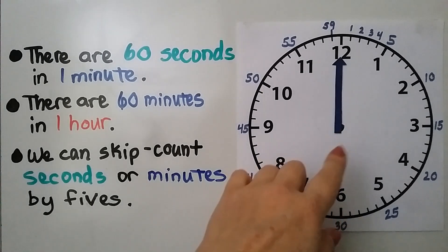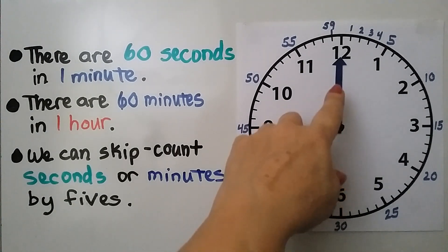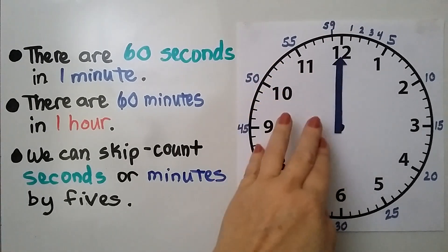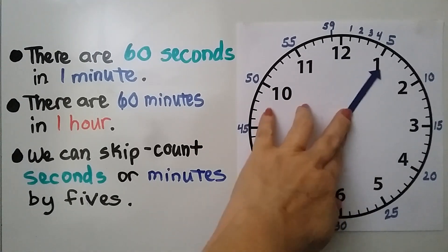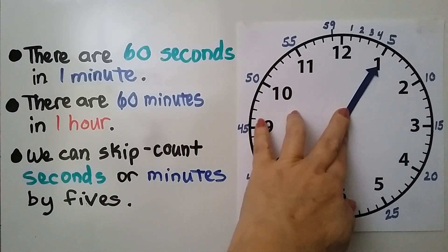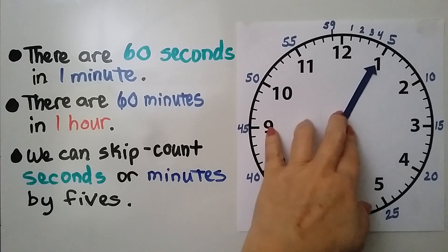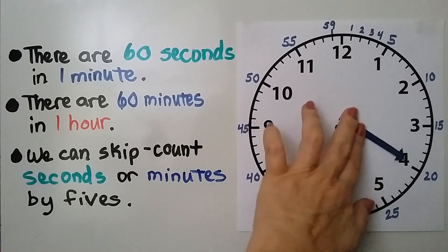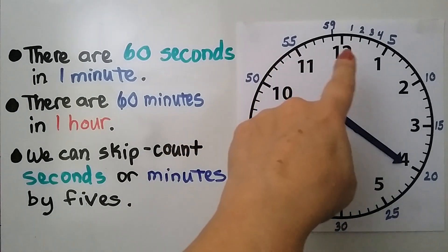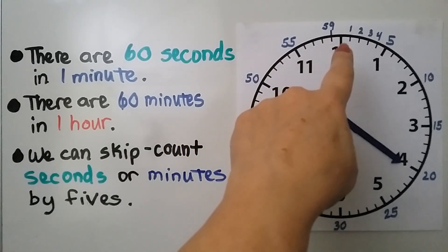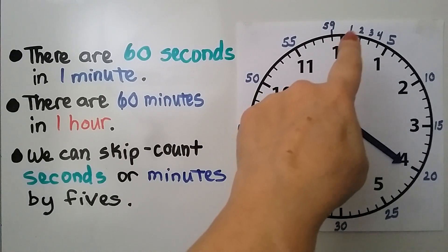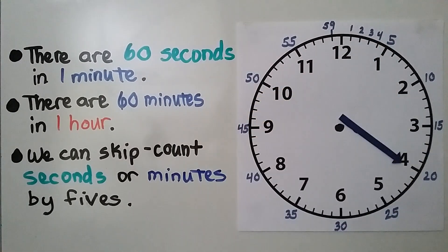We can skip count seconds or minutes by fives. We have our minute hand, it'll be the same with the second hand. When it's at the 12, that's zero minutes or zero seconds. When we move it to the 1, that's five minutes, and it could even be five seconds. We go 5, 10, 15, 20, and so on all the way around. Here's 59, and then back at the 12 would be 60, and it would start at zero again.